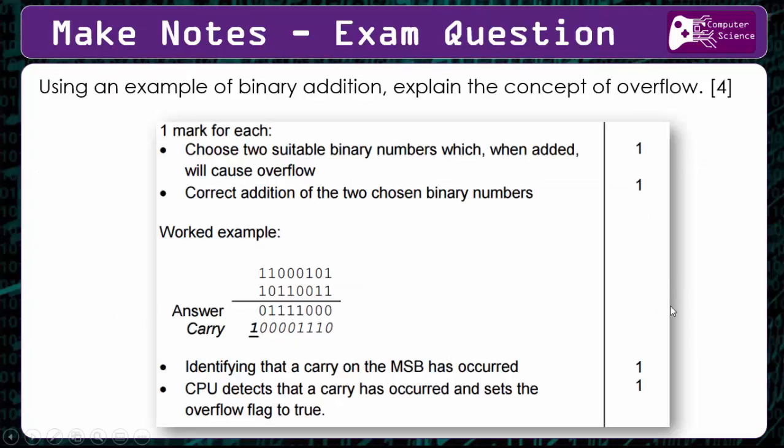So this is an example of an exam question and how you get the marks. To start with, you get two marks for picking two binary numbers that will add together to result in overflow, and then correctly adding them together. So this is quite a complex example.